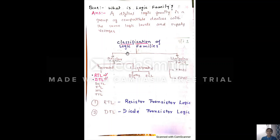We can start with the classification of the logic family. There are two types: bipolar and unipolar. Unipolar has three subtypes — PMOS, NMOS, and CMOS — which we will study in the next chapter. For bipolar, there are two types: saturated and unsaturated. In the saturated part, we will study the two main logic families: RTL and DTL. RTL stands for resistor transistor logic, and DTL stands for diode transistor logic. RTL uses resistors and transistors; DTL uses diodes and transistors to design logic circuits.